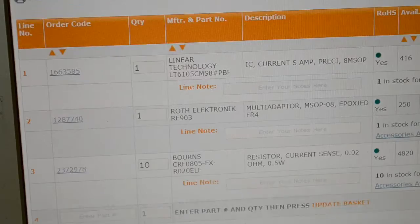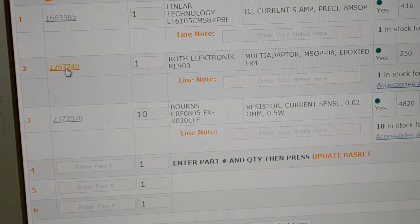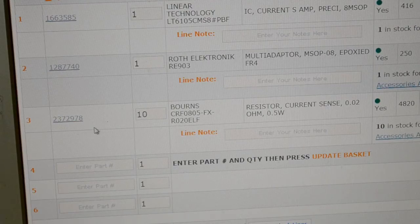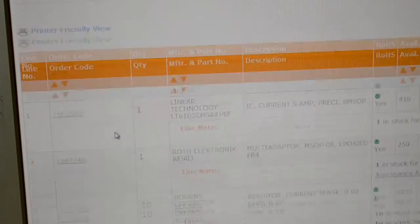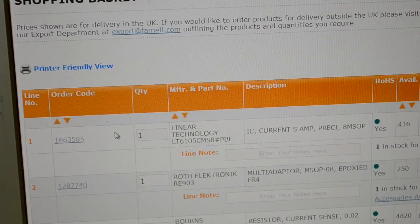I'll make that bigger for you. That's the part number for the chip, that's the part number for the board, and that's the part number. I bought 10 in case I need to adjust the values. That's 0.02 ohm, half watt resistor.